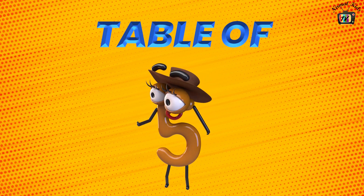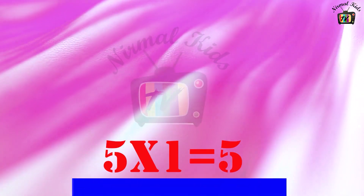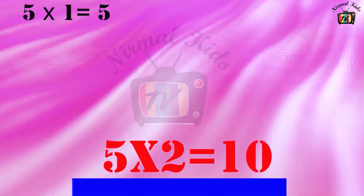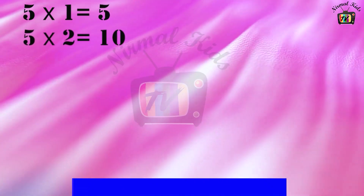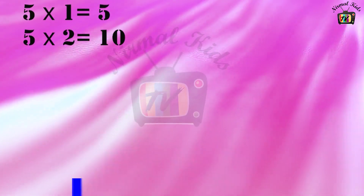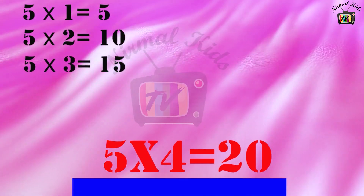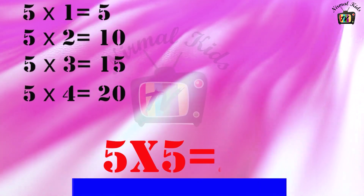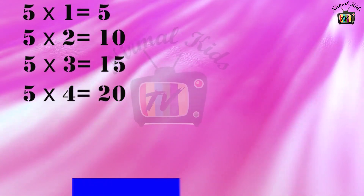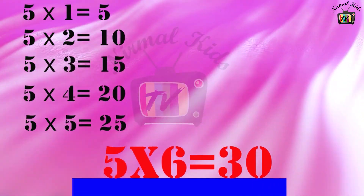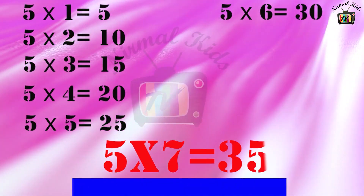Table of 5. 5 1 is 5. 5 2 is 10. 5 3 is 15. 5 4 is 20. 5 5's are 25. 5 6's are 30.